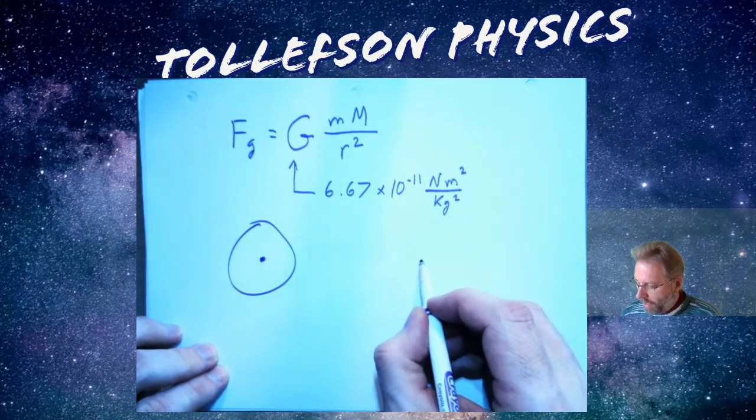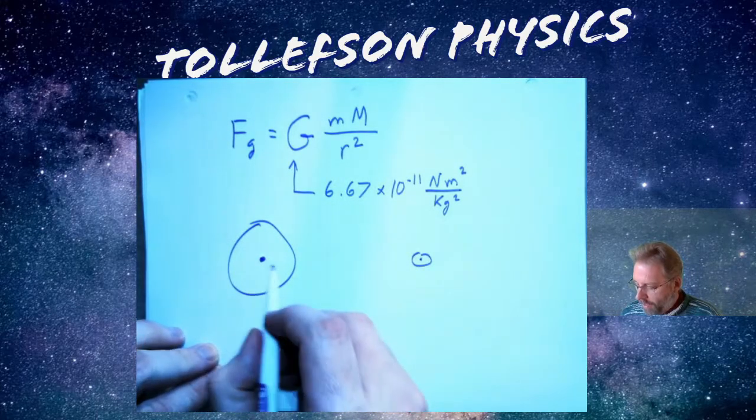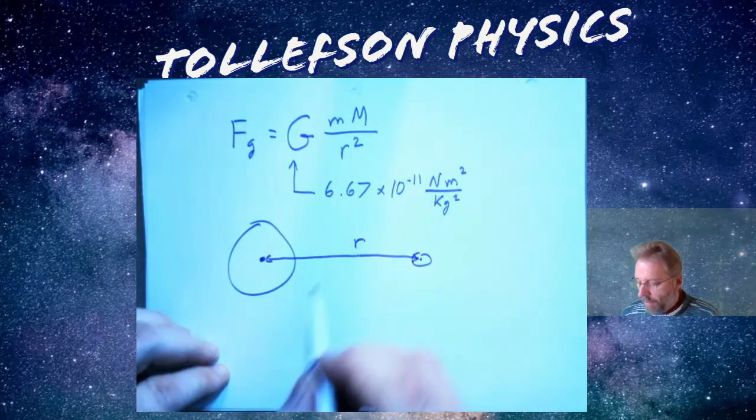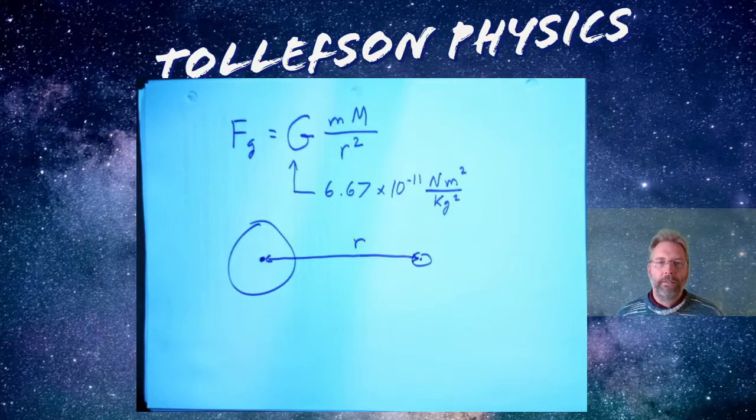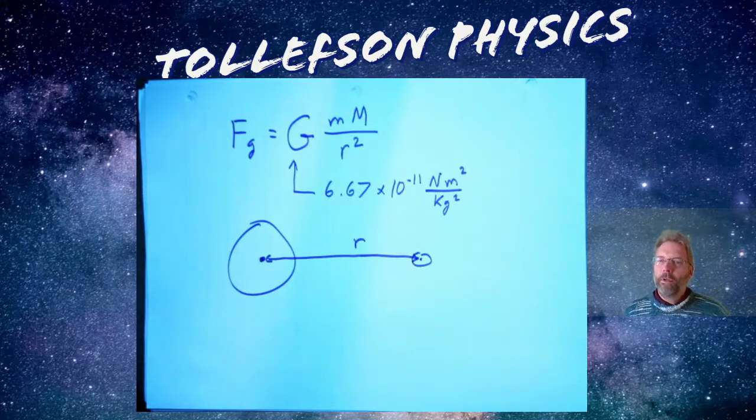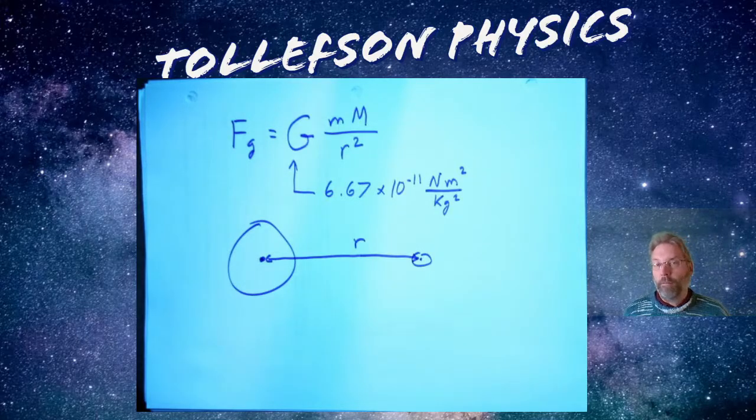When it talks about distance - let's say I have the planet Earth and I've got the moon way out here - the distance is referring to the center of mass. We're looking at the center of mass. A question that I frequently get is why is it R, why isn't it D or something like that?